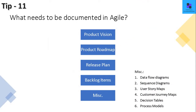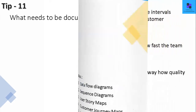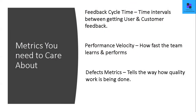What needs to be documented in Agile? Ensure your product vision, roadmap along with the release plan and backlog items are documented. Other items like data flow and sequence diagrams, user stories, and customer journey maps can also be documented. It's very important to track your Agile metrics. Three important techniques are feedback cycle time, performance velocity, and defect metrics — these are very important metrics to care about.